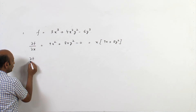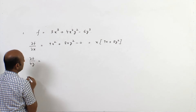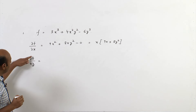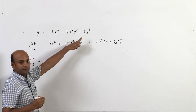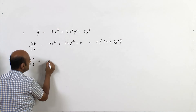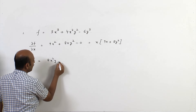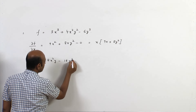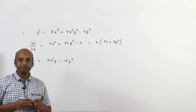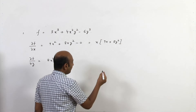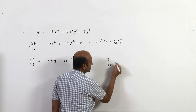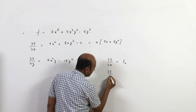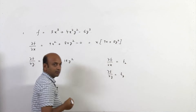Similarly, to find ∂f/∂y we differentiate with respect to y treating x as a constant. This gives 8x²y - 18y². Note that ∂f/∂x is sometimes also written as fₓ, and ∂f/∂y is also written as f_y.